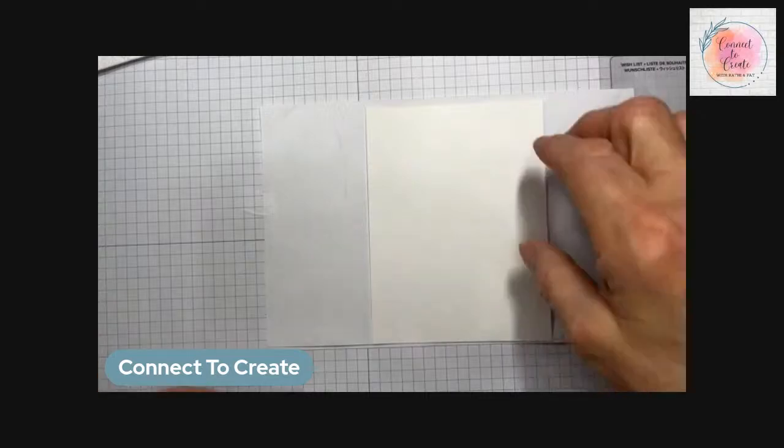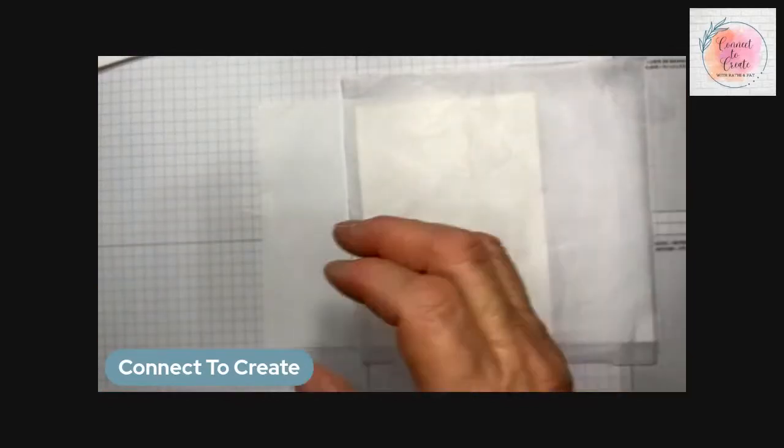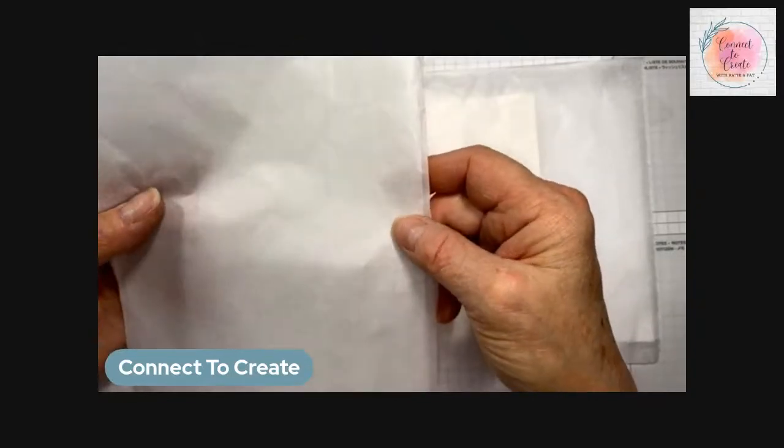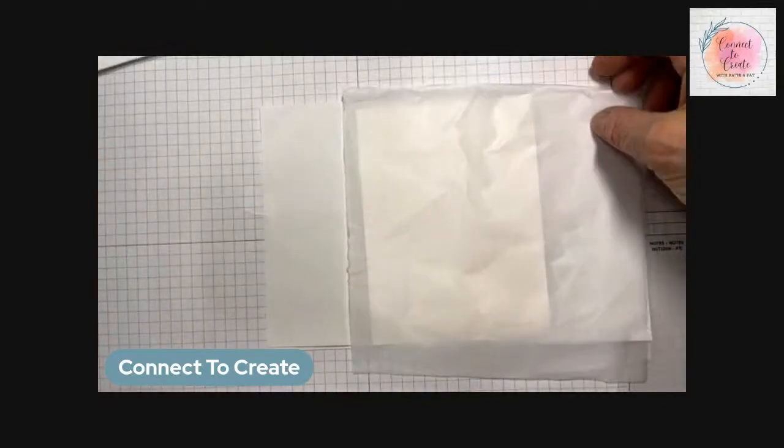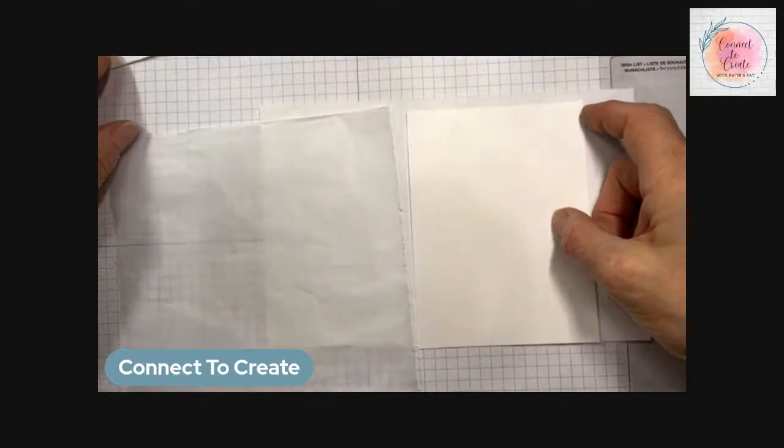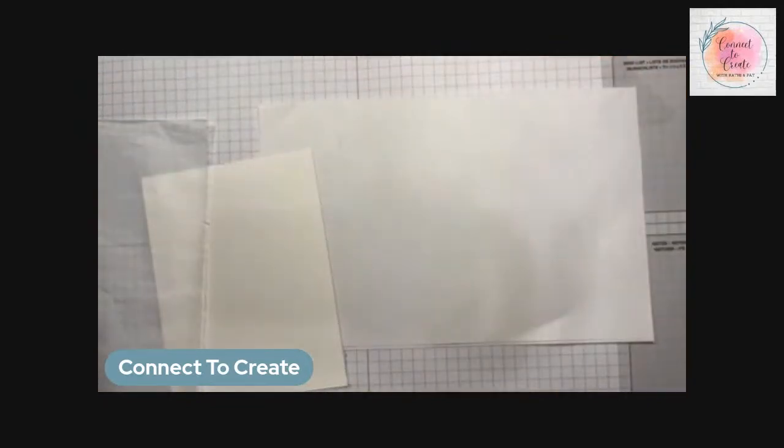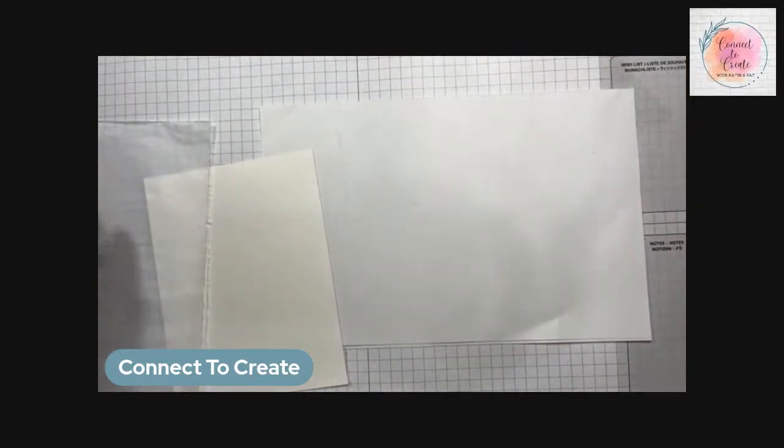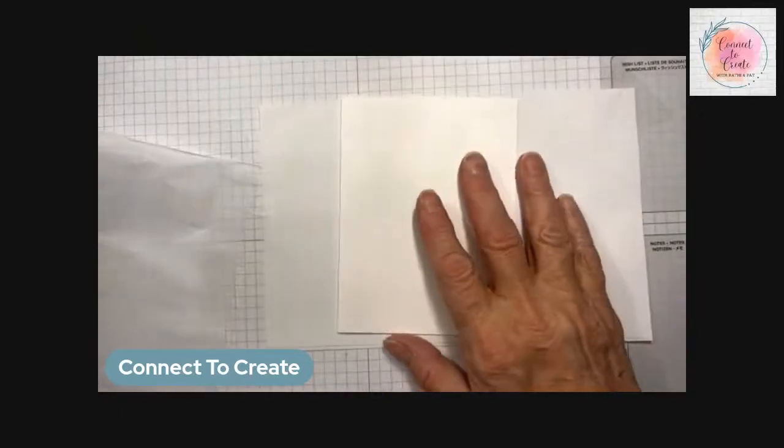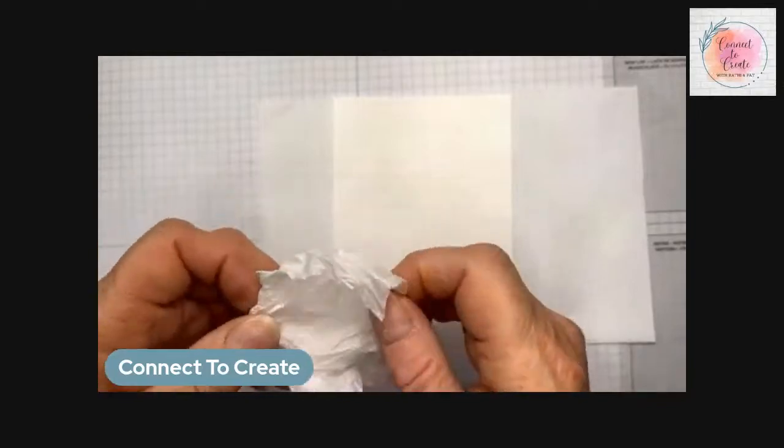Now, the technique, all you need is a piece of basic white cardstock, and we're going to use a piece of tissue paper. And this is just tissue paper that you would use to stuff a gift bag or wrap around a present before you wrap it. You can get it at the Dollar General store. And I have a piece that's six and a half by six and a half. And my piece of basic white is four by five and a quarter.